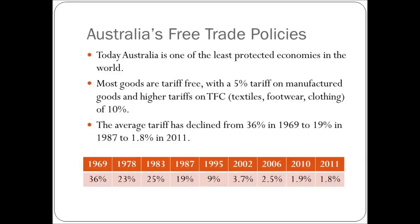So any goods and services that aren't produced in Australia do not have a tariff on them. And those were some of the first tariffs to be removed because there was no purpose to having them. The average tariff was 36% in 1969. It's fallen to 19% in 1987 and then 1.8% in 2011. And there's a table showing you how it's come down. You can see there was a big cut from the 60s to the 70s. That was the 25% across-the-board tariff cuts.